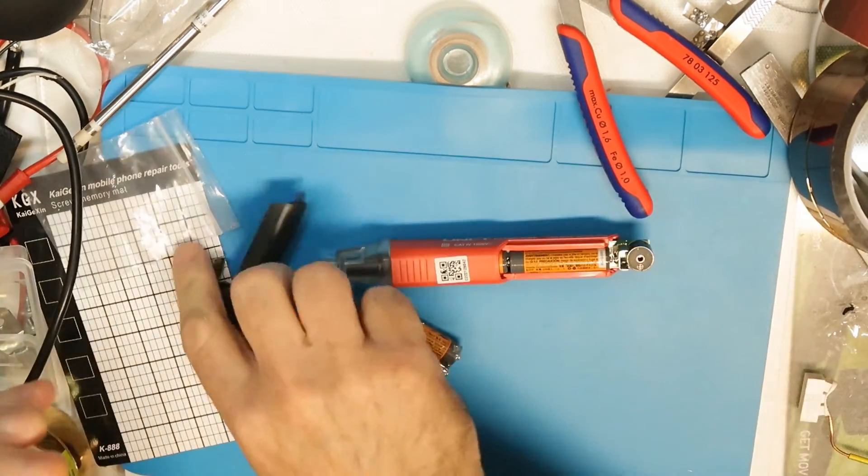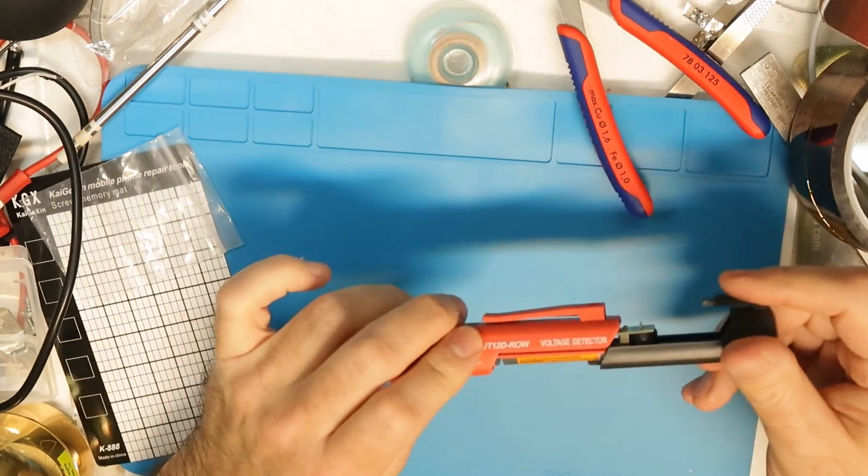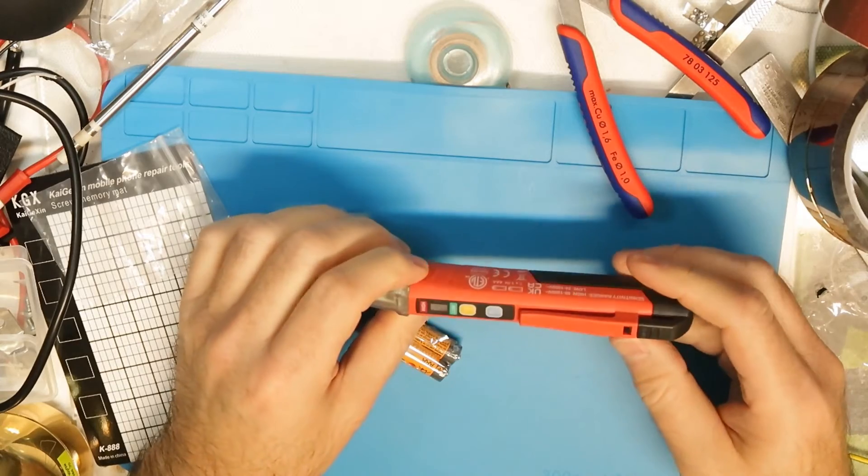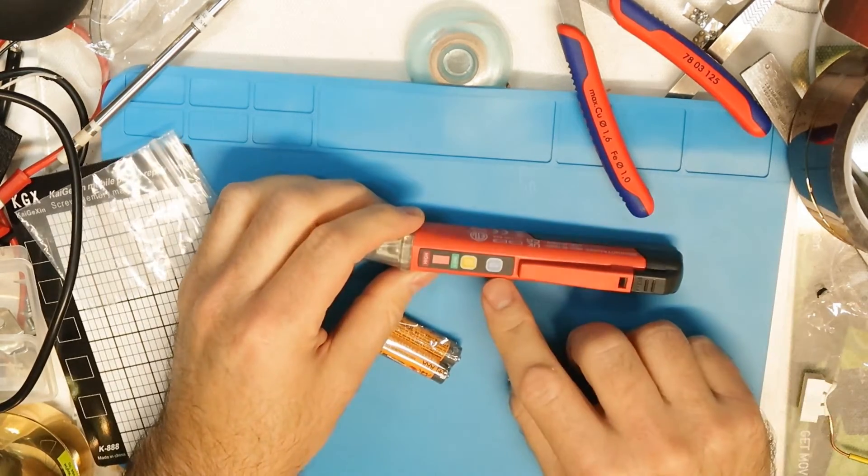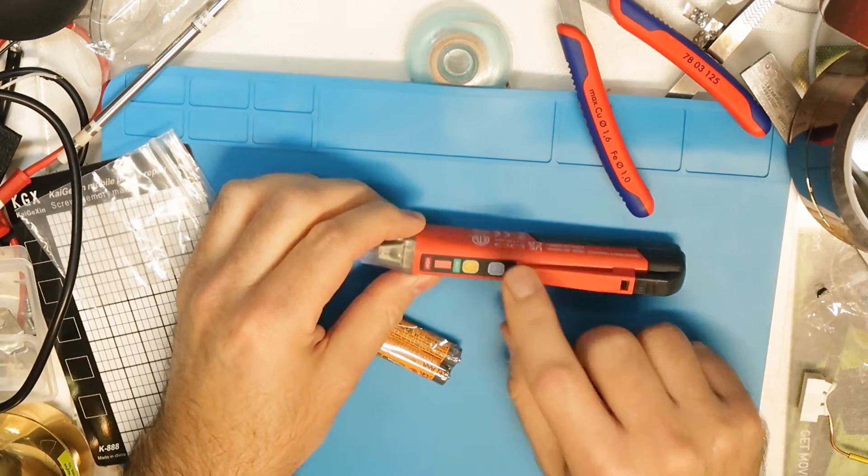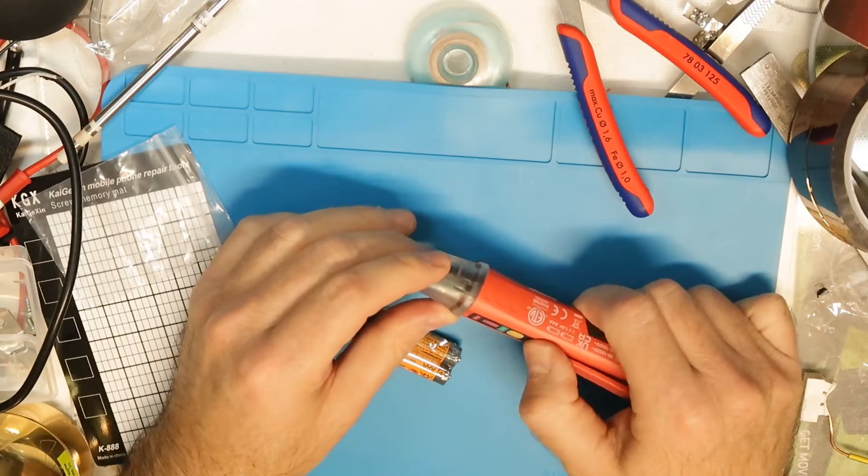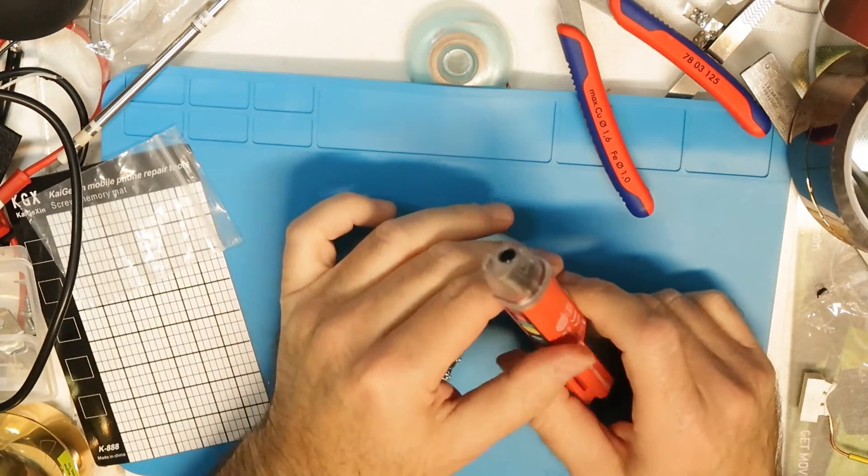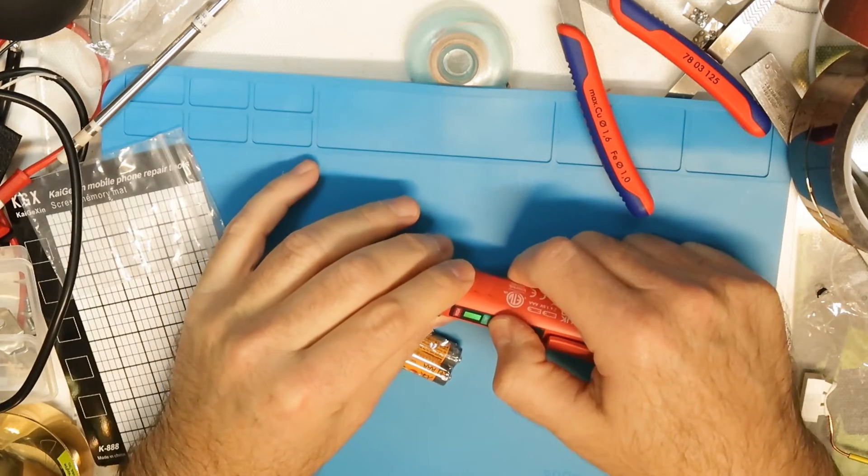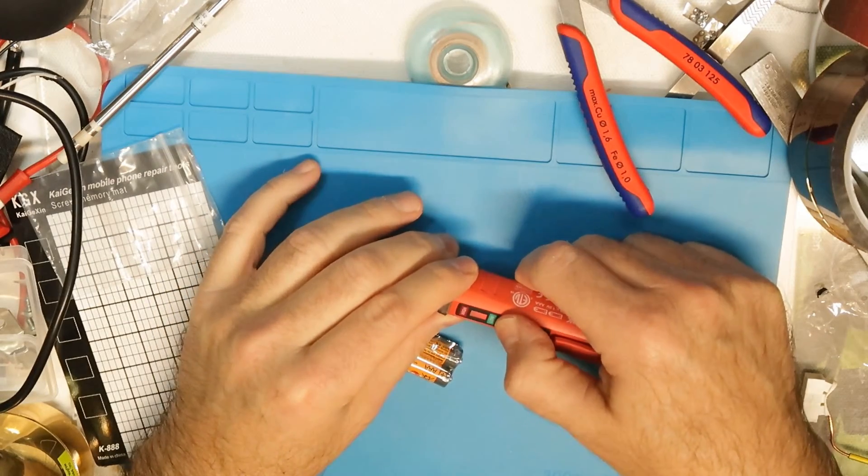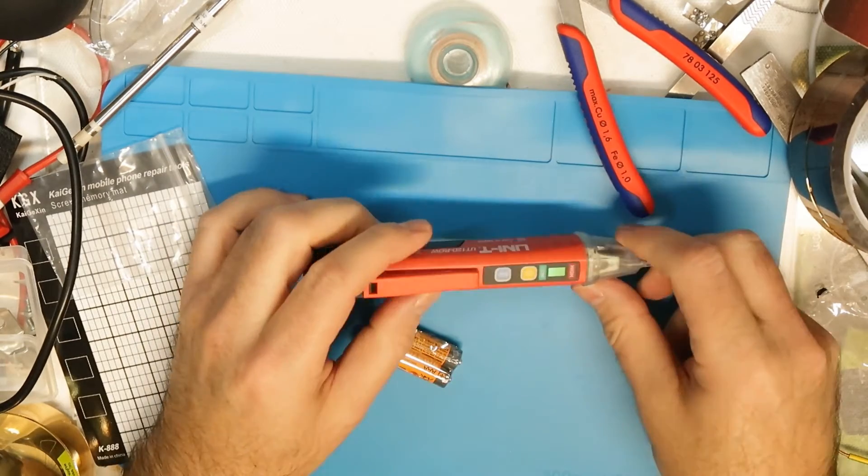And it is beeping, it means that something is - aha there is a power button, there is a light button, nice. But let's see, there is a high and low - what is high and low? Probably from what voltage it will detect the beep and everything.